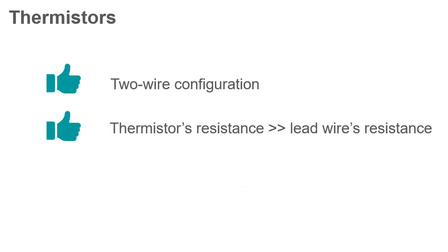Unlike RTDs, thermistors rarely require a configuration other than two-wire, because the resistance is several orders of magnitude greater than any lead wire resistance that may be present. This means the impact of lead wire resistance on measured resistance is minimal and often negligible.